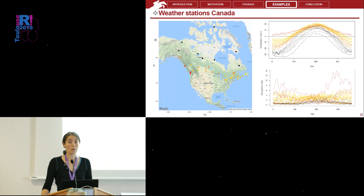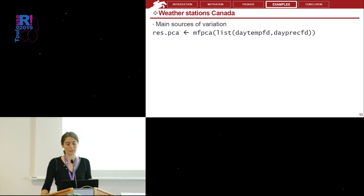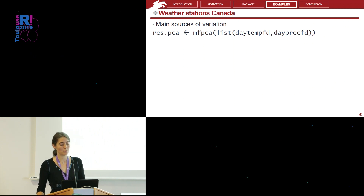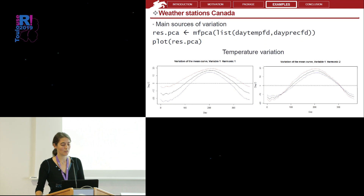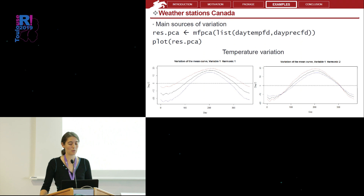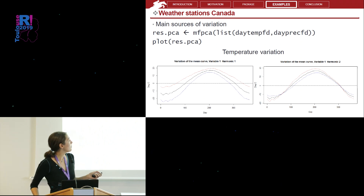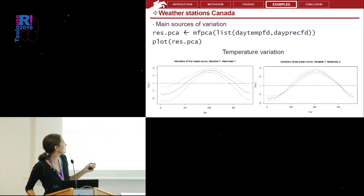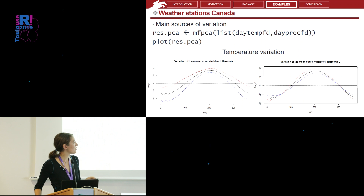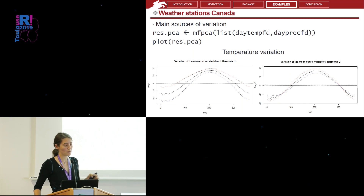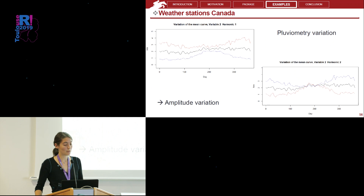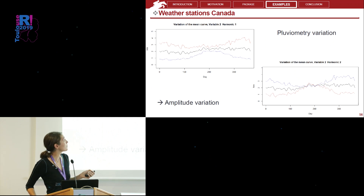We can also use the MFPCA function to look at the main sources of variation in the data. We apply MFPCA on both datasets simultaneously. One of the graphics provided is the mean variation: here in black we have the mean function, and in red and blue we have the variation around the mean. We can see that the main source of variation is an amplitude variation between the 35 cities, and that this amplitude variation is also seen on the mean curve for the pluviometry variable.